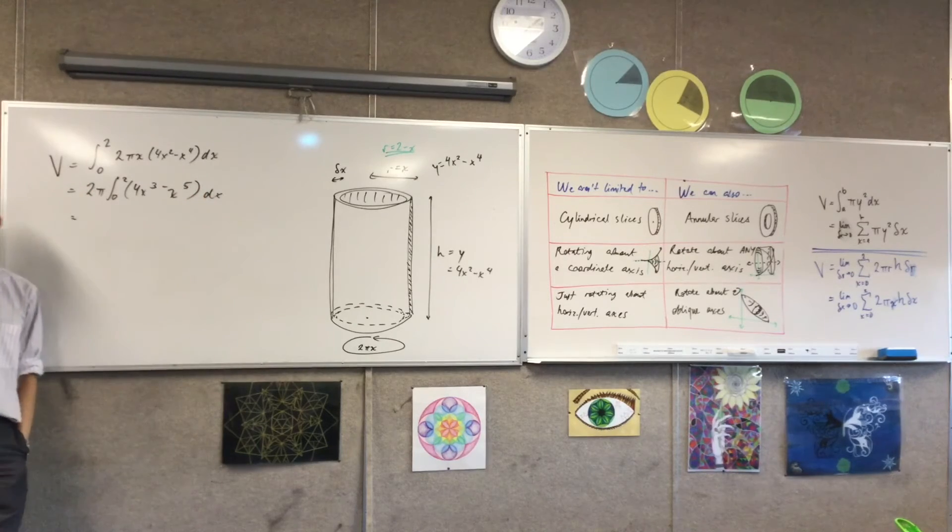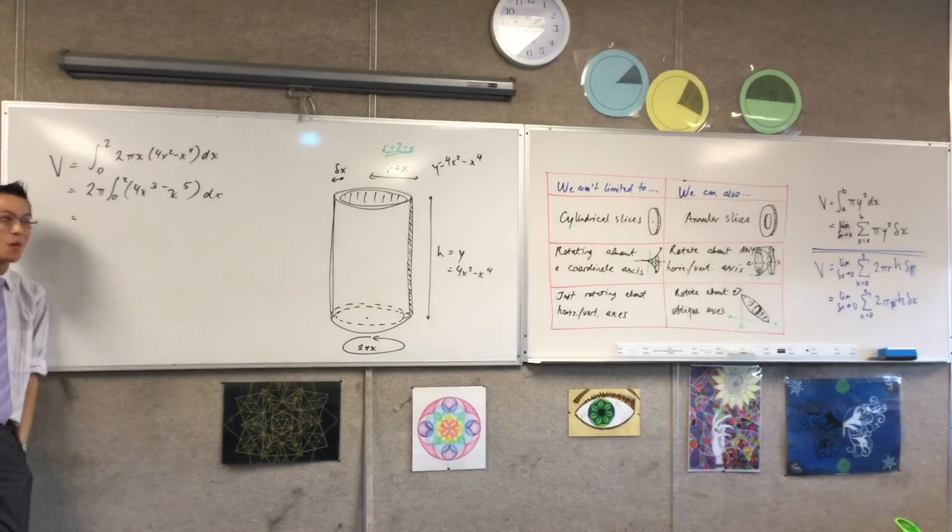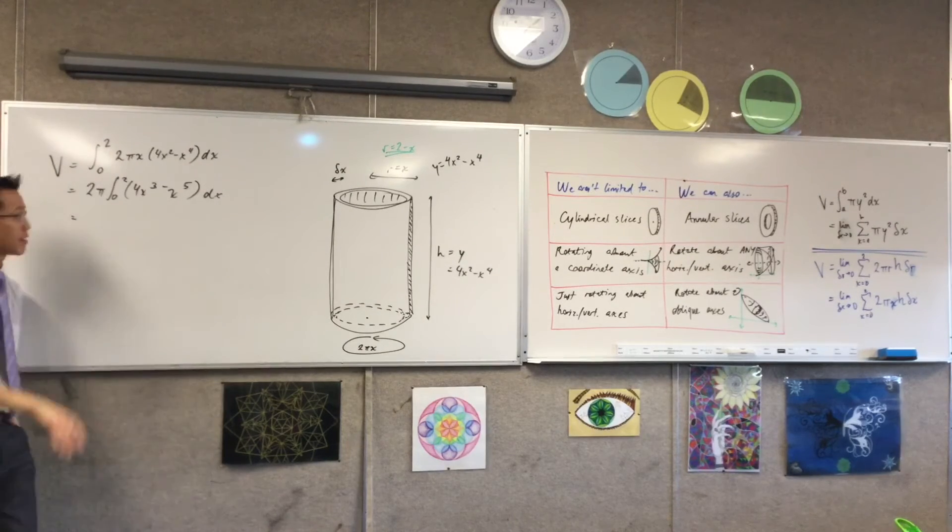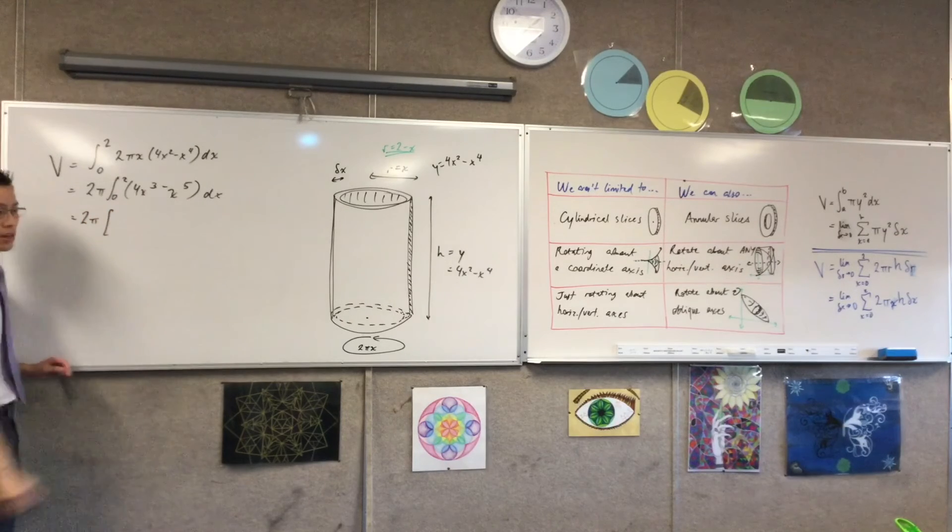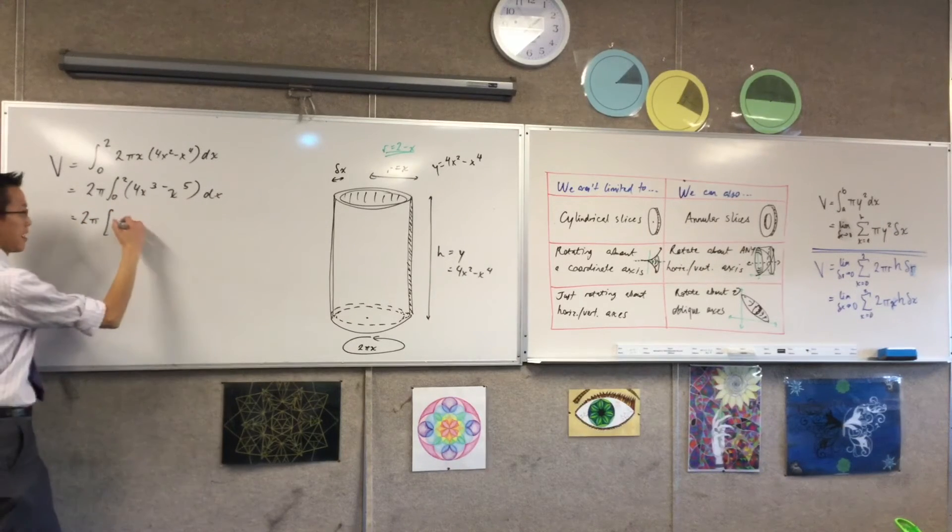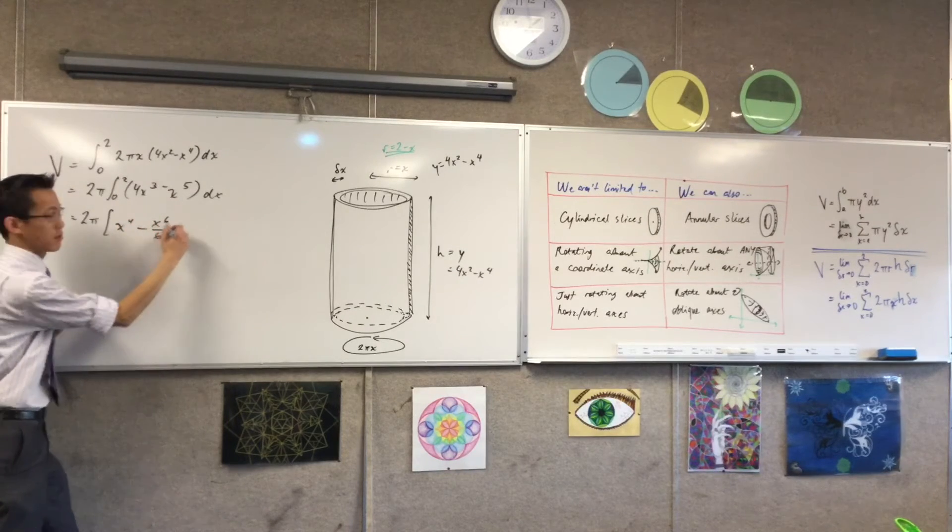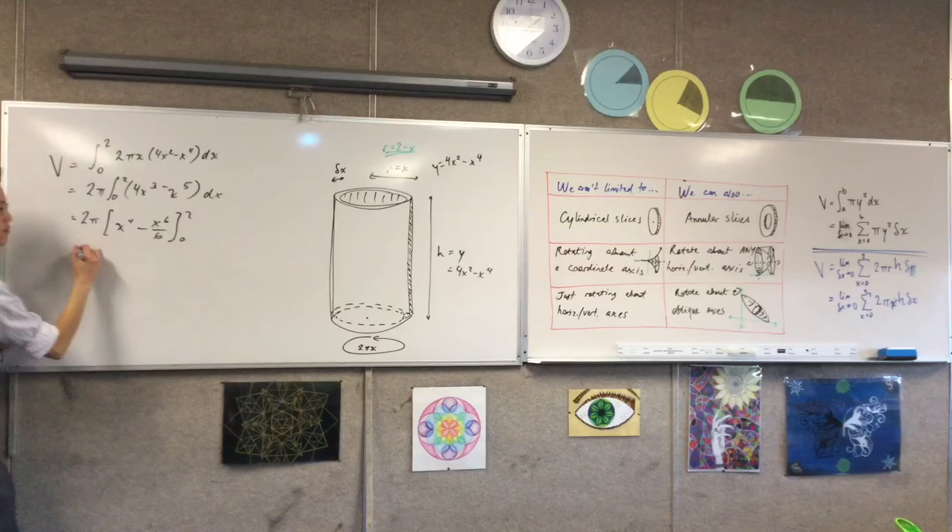Whoa, is this not a hundred times simpler than what we had before when we were dealing with the same volume rather by annular slices. 2π out the front. Primitive function, x to the 4, x to the 6 on 6, 0 to 2.